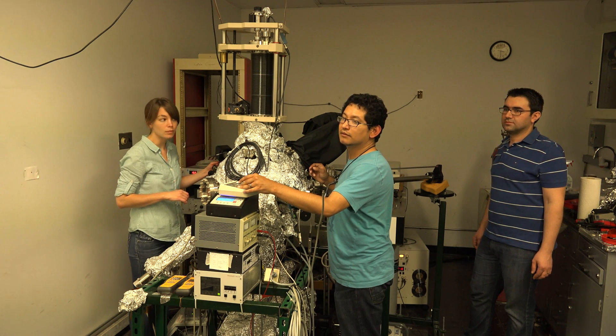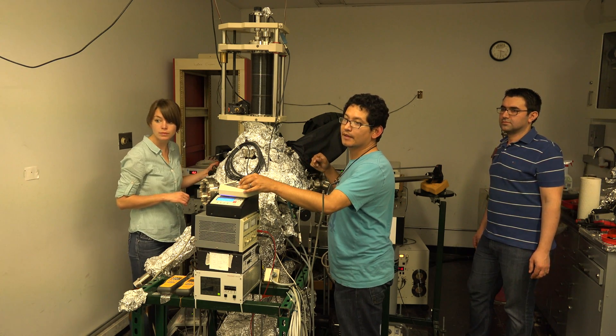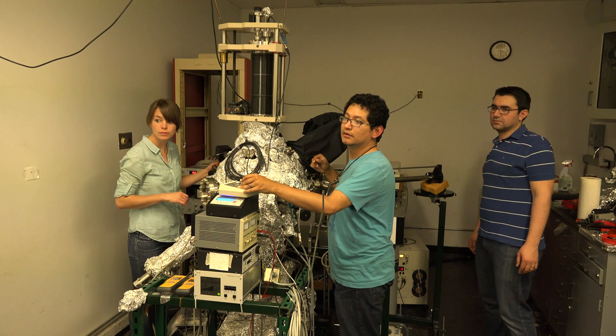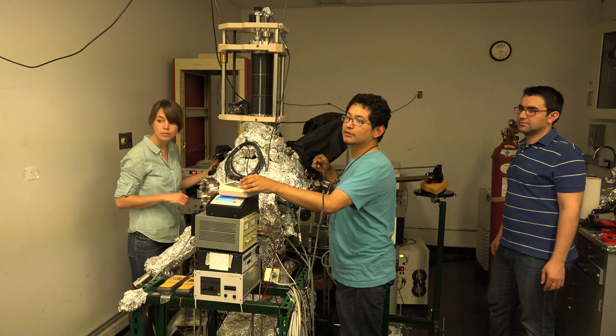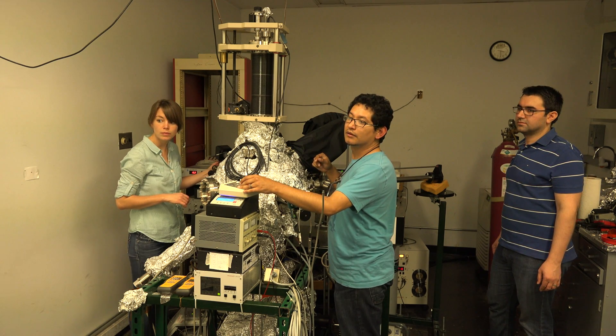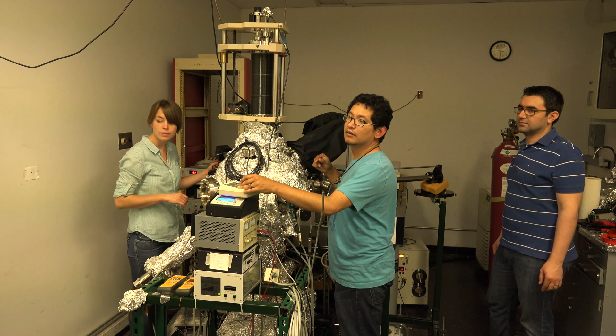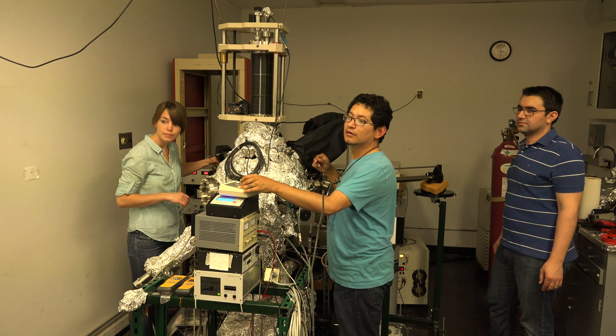By now, everyone has seen video of the reactors in Fukushima, Japan exploding. These explosions occurred because the zircaloid cladding that contains the uranium fuel reacted with steam at high temperatures. The hydrogen then exploded.